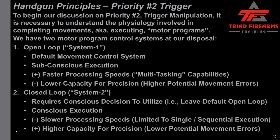Any discussion needs to begin with an understanding of the physiology involved in completing movements — executing motor programs. We have two motor program control systems at our disposal. The first is open loop, also known as System 1. This is our default movement control system, and it is subconscious execution of movement. If you think about all the movements you do, if you had to apply conscious thought to them, well, that would be pretty inefficient.